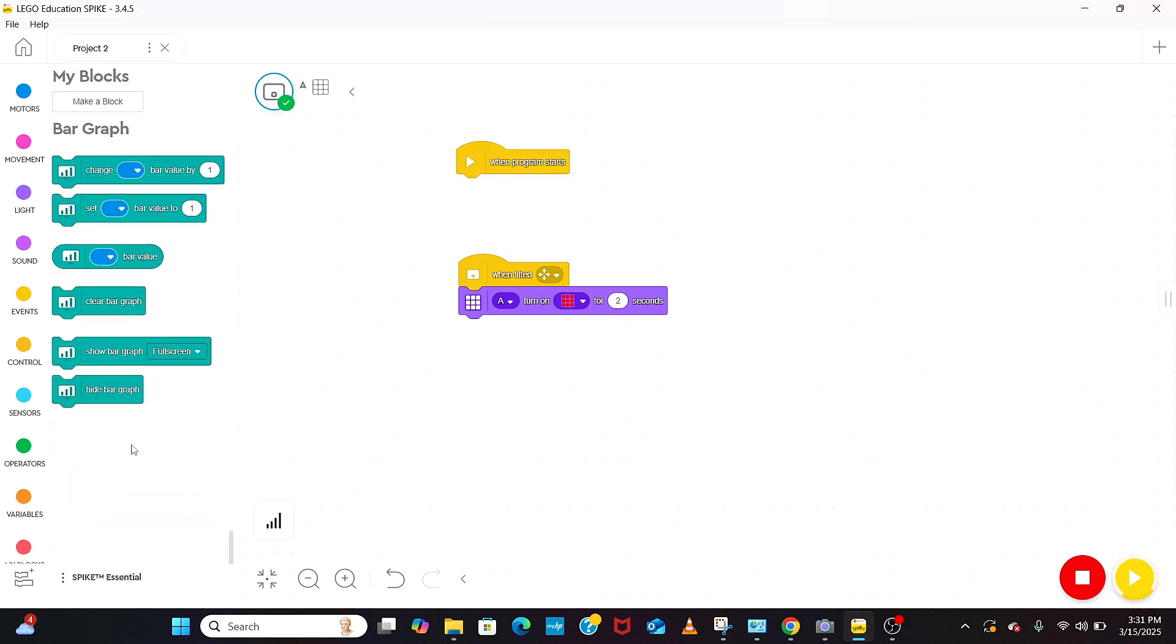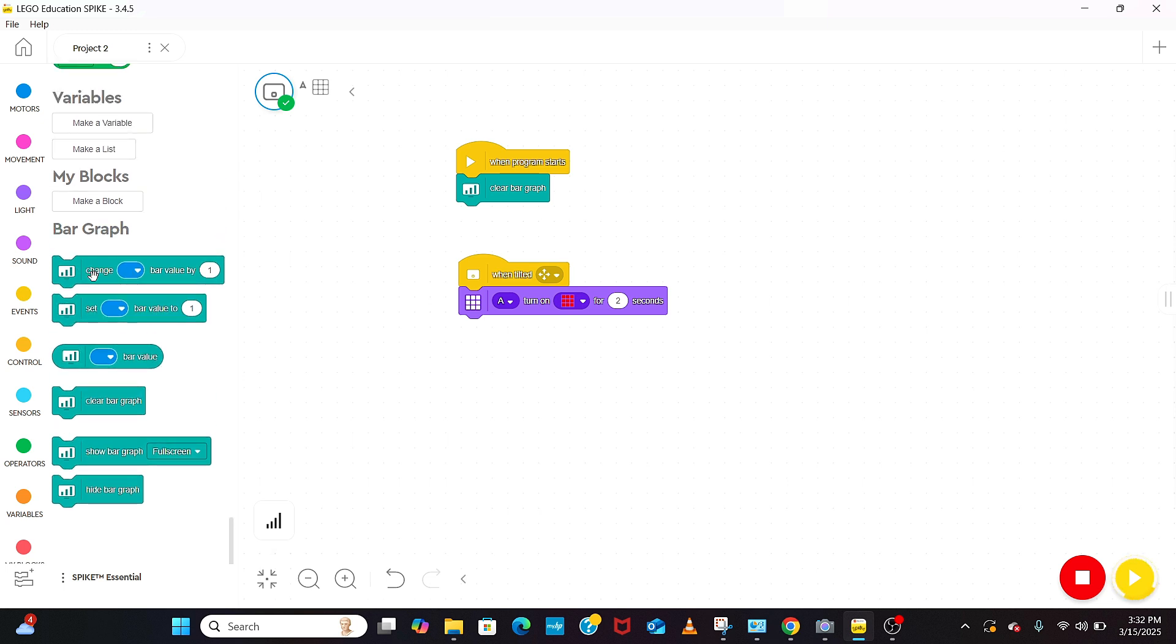In the same program we add another function to clear the bar graph values when we start the program. Now we add another function to increase the value of bar graph by one when there is a tilt or the light turns on. We can also change which color displays in the bar graph. The values of the bar graph is shown at bottom left.